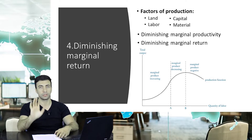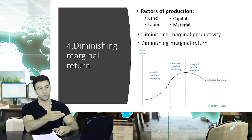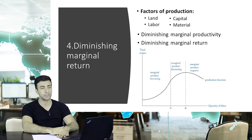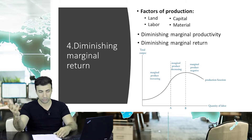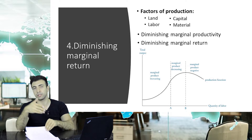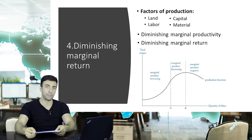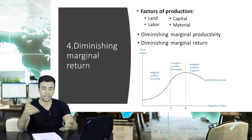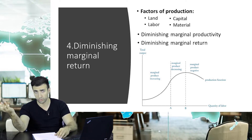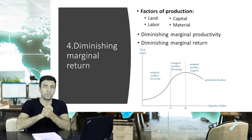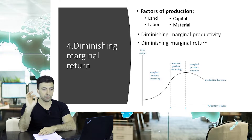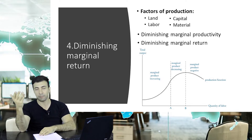Now let's discuss diminishing marginal returns. First, there are four types of factors of production — remember this term because you will encounter it throughout the topics and exams. Factors of production are the inputs we use to produce goods. We have land, labor (from unskilled labor to top managers), capital (physical capital such as plant and equipment, or financial capital), and materials — simply raw materials.